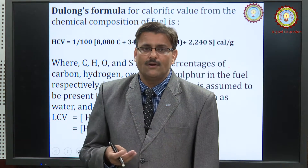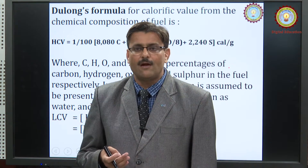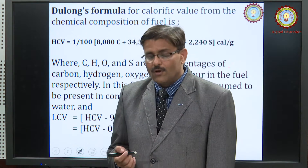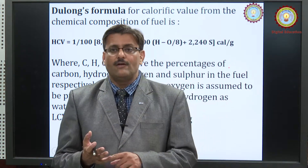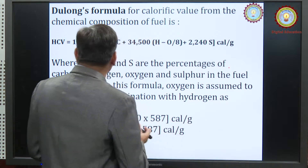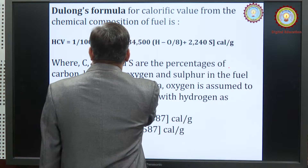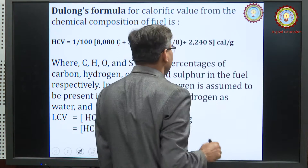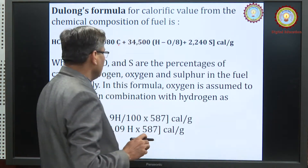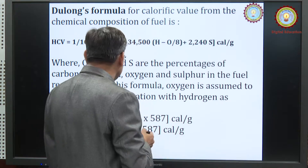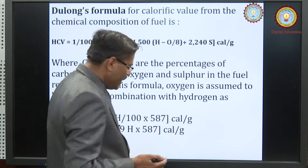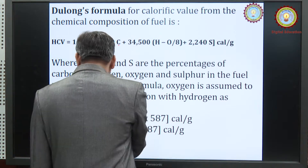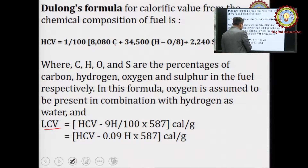By estimation of carbon, hydrogen, oxygen, and sulfur: if you know the percentage of these elements in a fuel, you can directly use Du Long's formula to calculate gross calorific value. The formula is: HCV = (1/100) × [8080C + 34500(H − O/8) + 2240S] calories per gram, where C, H, O, and S are the percentages of the respective elements. After calculating higher calorific value, LCV can be calculated by subtracting (9H/100) × 587 from the GCV.